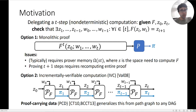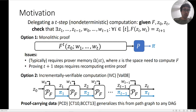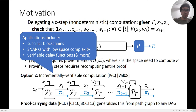There is a generalization of IVC called proof-carrying data, which takes this path computation and generalizes it to any directed acyclic graph. For the purposes of this talk, I will discuss IVC and PCD interchangeably. Some applications of IVC and PCD include succinct blockchains, SNARKs with low space complexity, and verifiable delay functions.